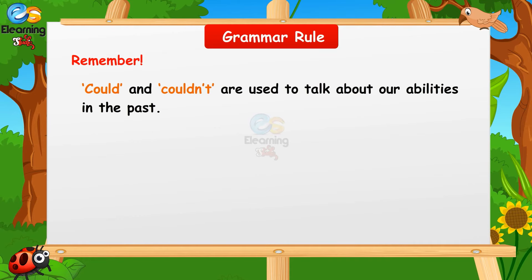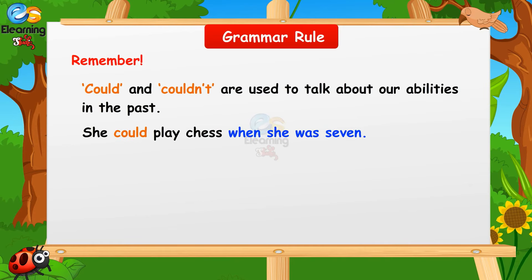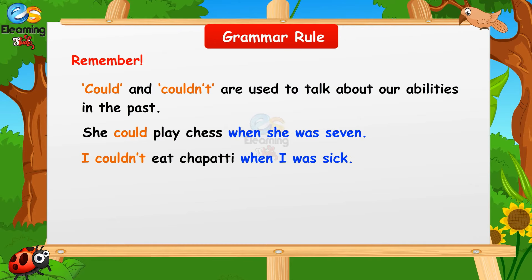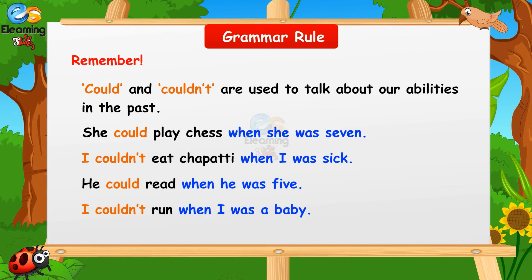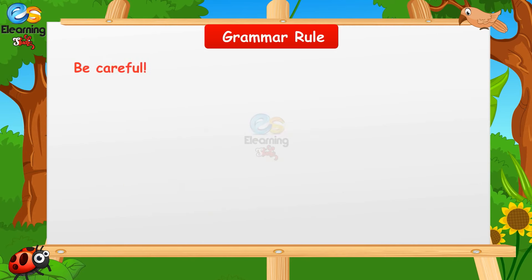Remember: could and couldn't are used to talk about our abilities in the past. She could play chess when she was seven. I couldn't eat chapati when I was sick. He could read when he was five. I couldn't run when I was a baby.